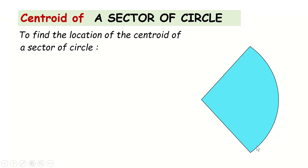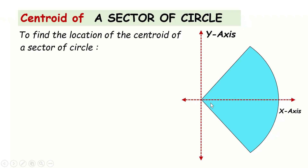We have a sector of a circle with x and y axes taken as reference axes. The radius of the sector is R, and the central point O coincides with the origin. We have taken a symmetrical sector, meaning the angle above the x-axis and the angle below the x-axis are both equal to alpha, so the overall angle of the sector is 2·alpha. Since the x-axis divides the sector into two equal parts, it is the axis of symmetry, and therefore the centroid lies on this x-axis.